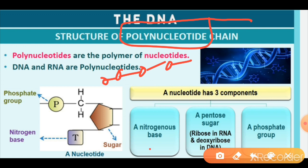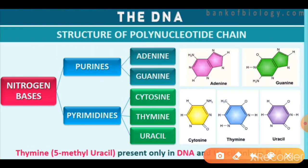A nucleotide has three components: nitrogen base, pentose sugar — which is ribose in RNA and deoxyribose in DNA — and phosphate group. The 5-carbon ring has carbon positions 1 through 5. The nitrogen base is attached at carbon number 1, and the phosphate group is attached at carbon number 5. There are different nitrogen bases in the polynucleotide chain, classified into two types: purines — adenine and guanine — and pyrimidines — cytosine, thymine and uracil.